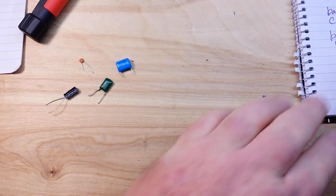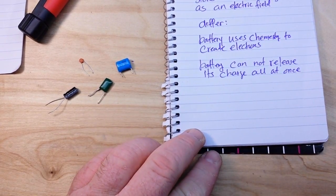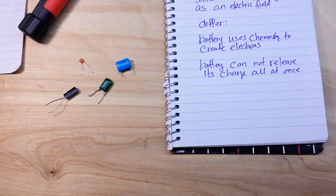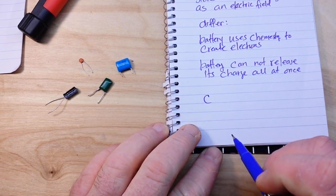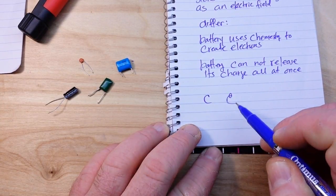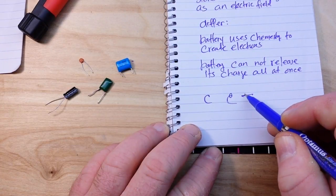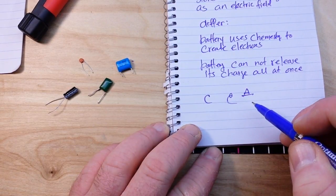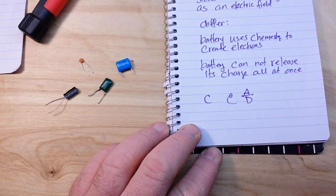All of these are plate capacitors and they are all governed by the same formula. That formula is the capacitance equals the dielectric constant multiplied by the area of the plates over the distance between the plates.